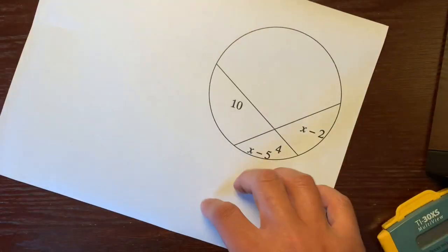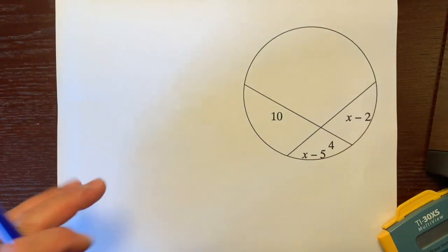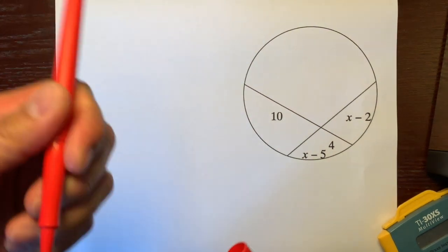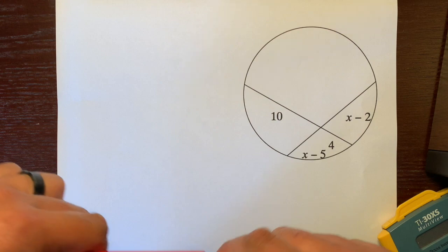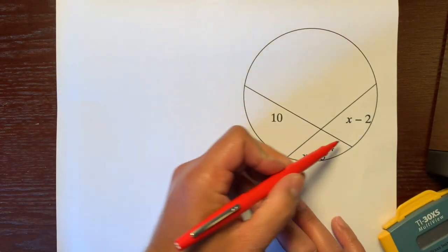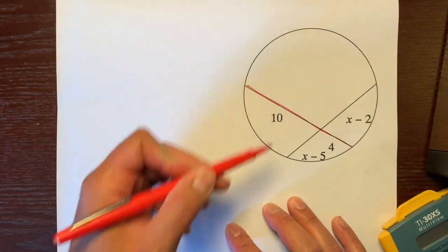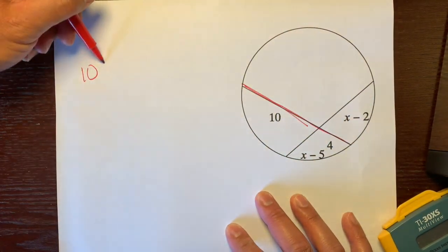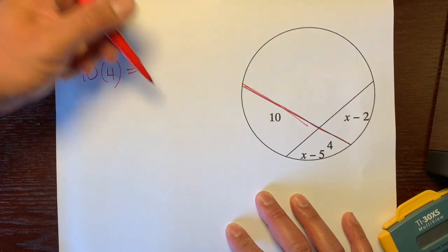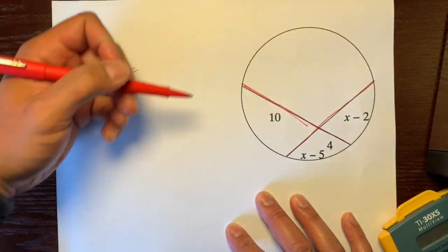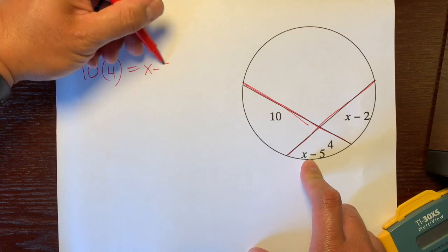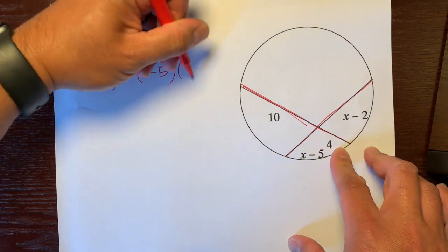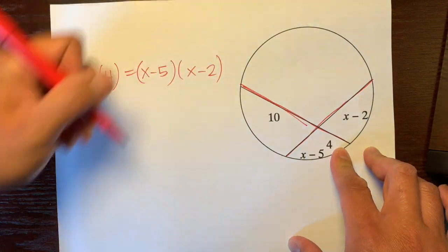And the next example, which is the final example, draw this in your notebooks. I'm going to use a red pen because this is the most challenging out of the three, but you've got this. So we're going to start off with this chord right here. So this piece, which is 10 times this piece, which is 4, is equal to, now with this chord, this piece is x minus 5. Put parentheses around that, times this piece, which is x minus 2. Put parentheses around this.